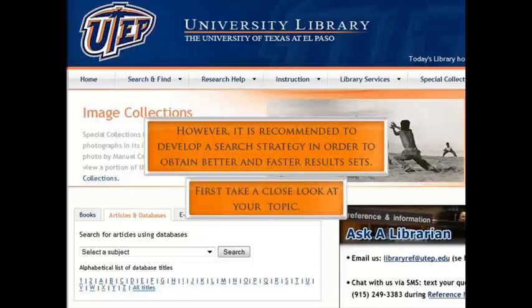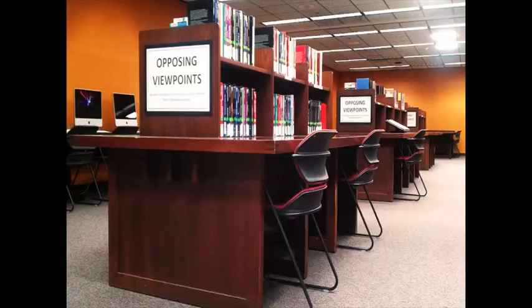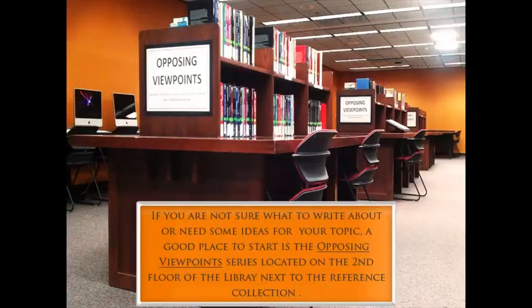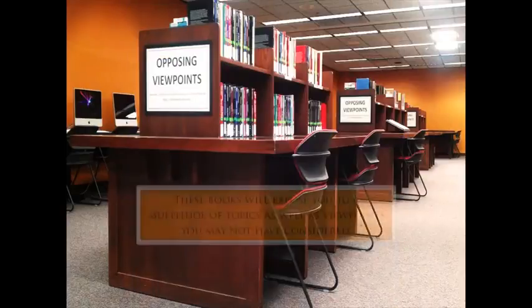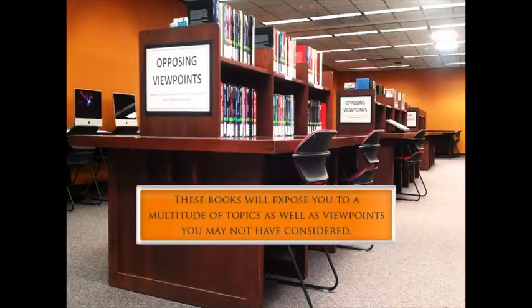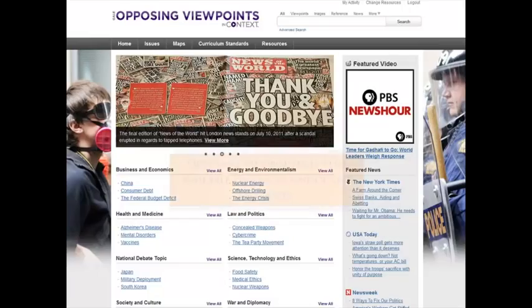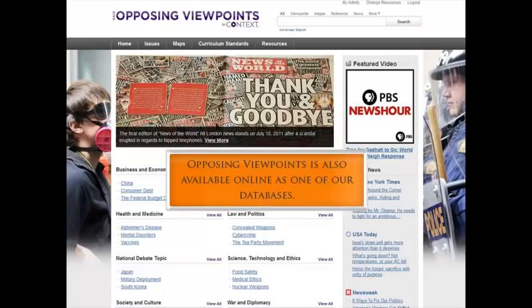First, take a close look at your topic. If you're not sure what to write about or need some ideas for your topic, a good place to start is the Opposing Viewpoints series, located on the second floor of the library next to the reference collection. These books will expose you to a multitude of topics as well as viewpoints you may not have considered. Opposing Viewpoints is also available online as one of our databases.